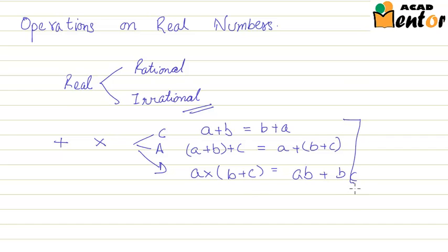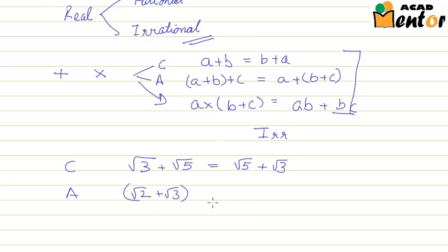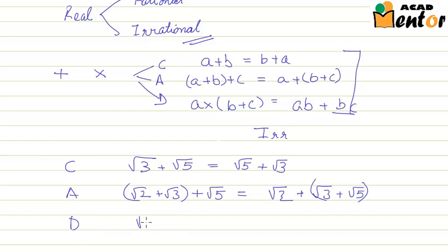All these properties also hold true for irrational numbers. For example, the commutative property: √3 plus √5 is equal to √5 plus √3. The associative property: √2 plus √3 plus √5 is the same as √2 plus (√3 plus √5). And the distributive property: √2 into (√3 plus √5) is equal to √2·√3 plus √2·√5.